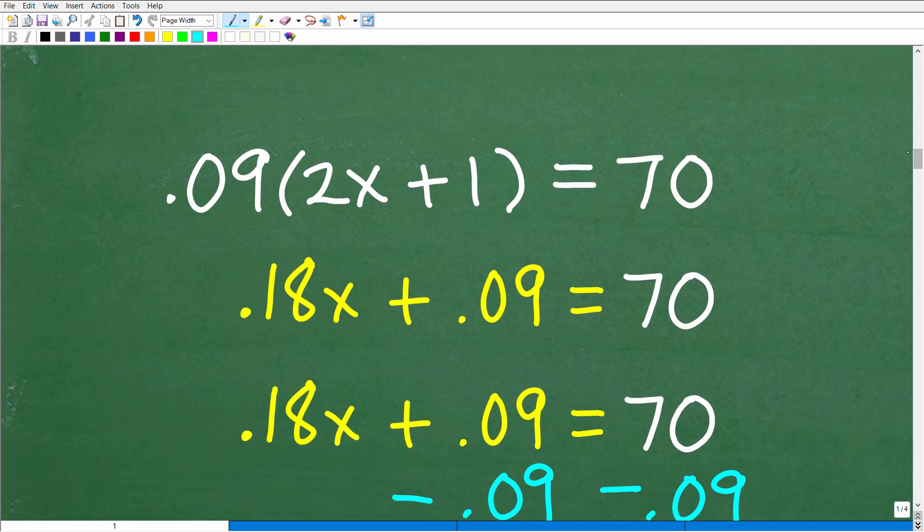Okay, so to solve this equation, 0.09 times 2x plus 1, first thing we need to do is the distributive property. We're going to take that 0.09, multiply it by this 2x. We're going to get 0.18x, and this 0.09 times this 1, we're going to get 0.09 equal to 70.